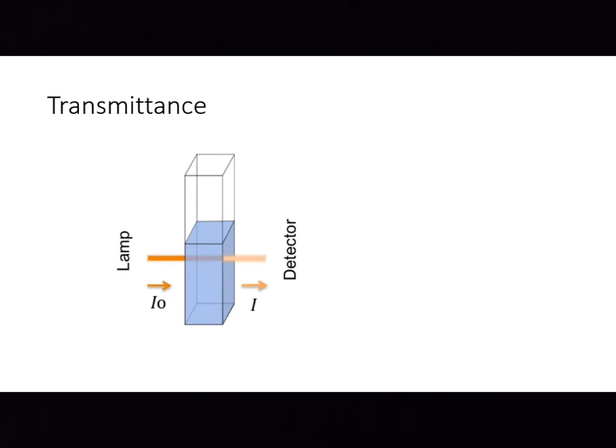As the light passes through the solution, some light might get absorbed. In this case, the intensity of the transmitted light is smaller than that of the incident light. Let's denote the intensity of the transmitted light as capital I. Transmittance is simply the ratio of transmitted intensity over the intensity of incident light times 100 percent.